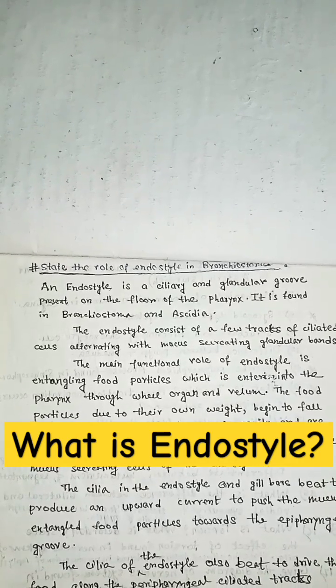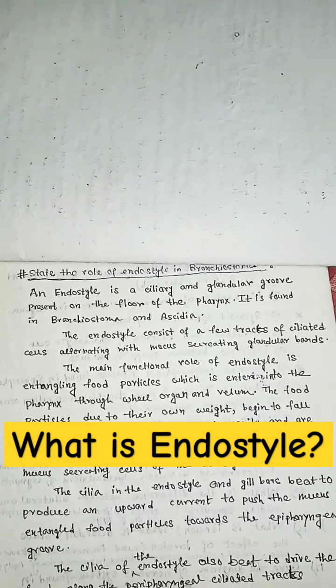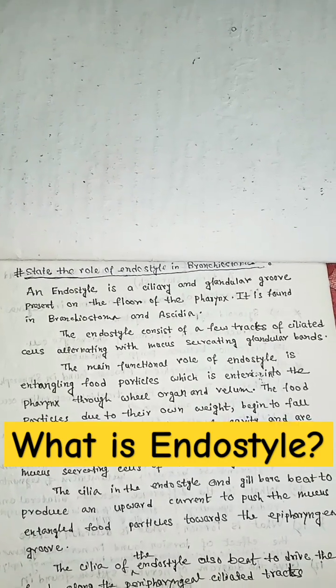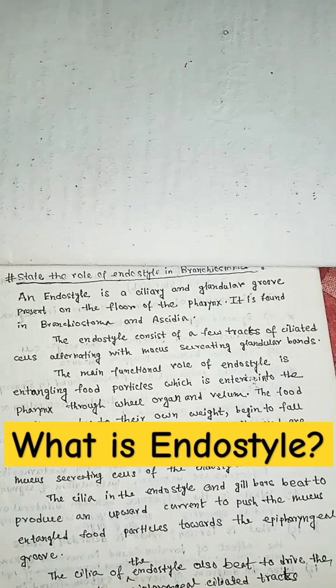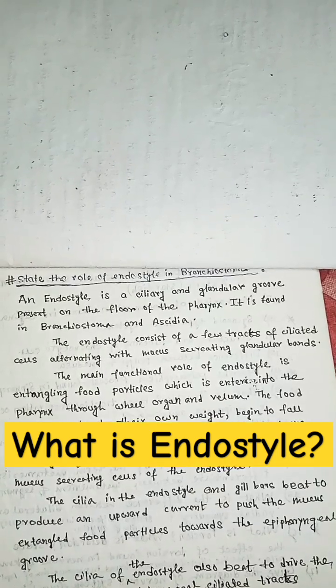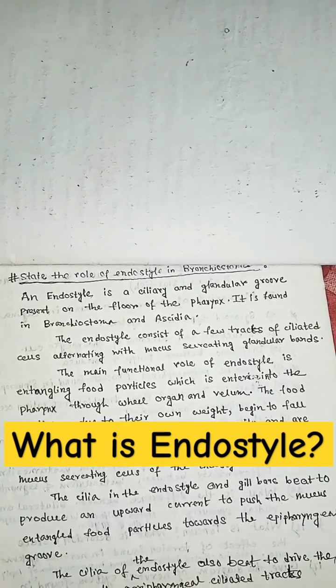Endostyle. An endostyle is a ciliary and glandular group present on the floor of the pharynx. It is found in branchiostoma and acedia.